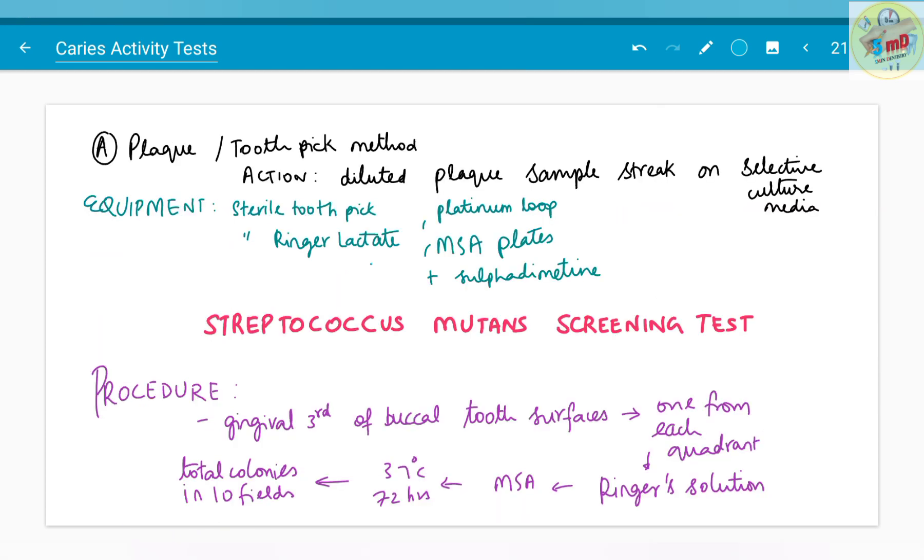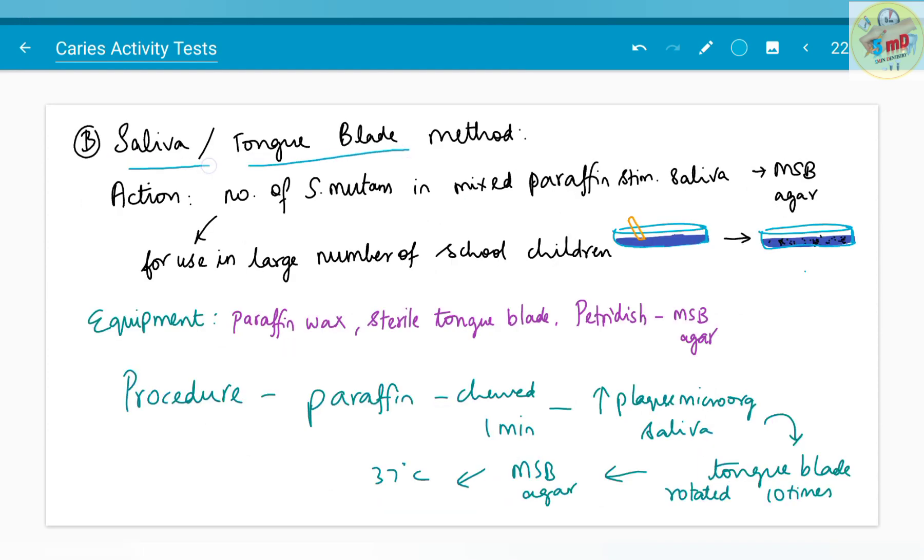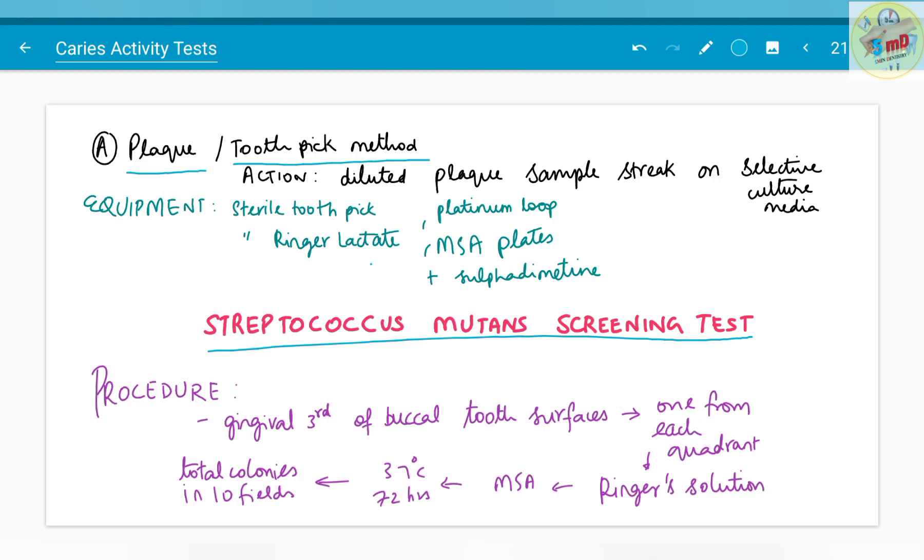The next test is streptococcus mutans screening test. In this test, there are two methods: either using toothpick for plaque collection or tongue blade for saliva collection. In the first method using toothpick, the action is by diluting plaque sample streaked on selective culture media. The equipments needed include sterile toothpick for collection of plaque, platinum loop for streak culture on selective culture media, and MSA plates plus sulfur dimetin and ringer lactate solution, which is also sterile.